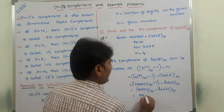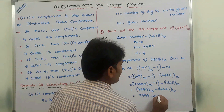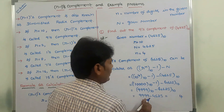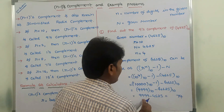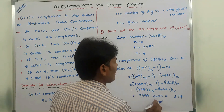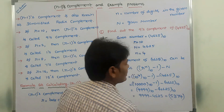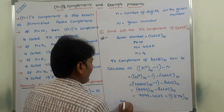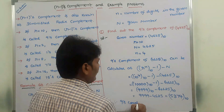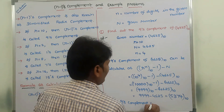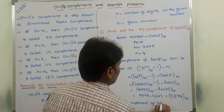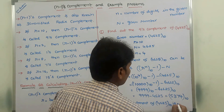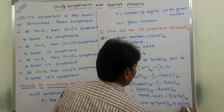We compute 9,999 minus 4,625. So: 9 minus 5 is 4, 9 minus 2 is 7, 9 minus 6 is 3, 9 minus 4 is 5. The result is 5,374 base 10. Therefore, the 9's complement of 4,625 base 10 is 5,374 base 10.